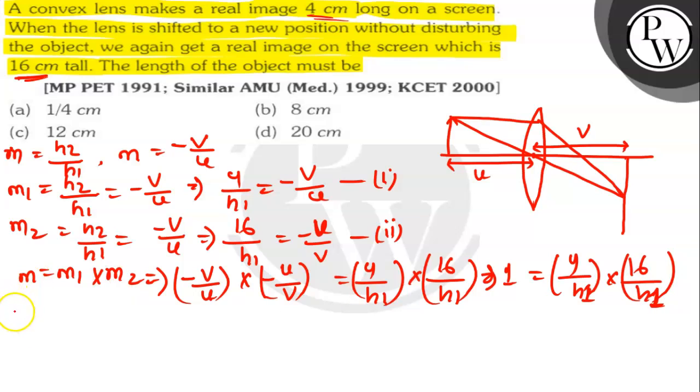On simplification, h1 squared equals 64. So h1 equals root of 64, which is 8 centimeter. The object height is 8 centimeter. So the correct option is option b. Thank you.